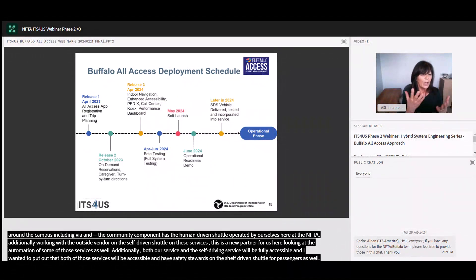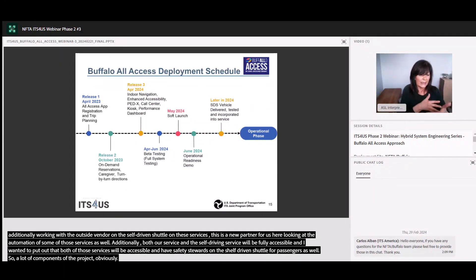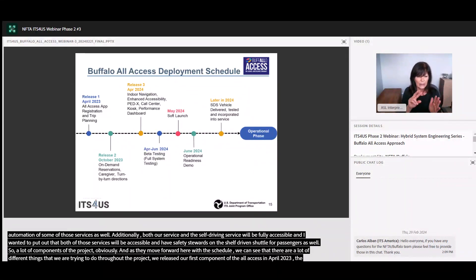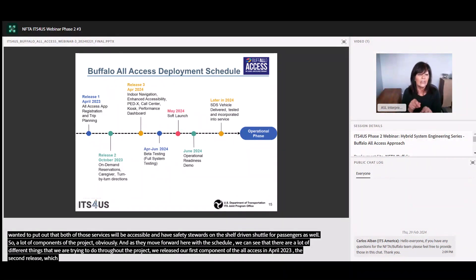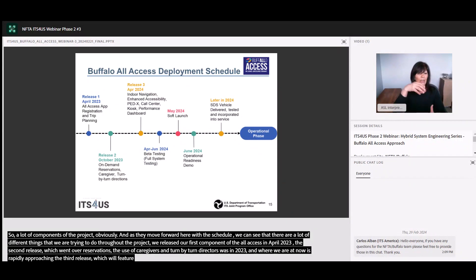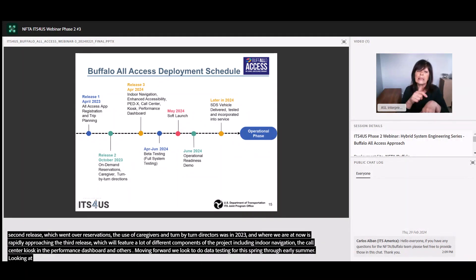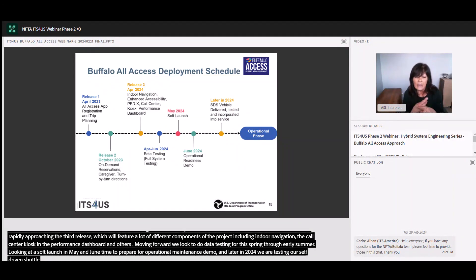There are a lot of components of our project. We released our first component of the All Access app in April of 2023. The second release, covering on-demand reservations, the use of caregivers, and turn-by-turn directions, was in October of 2023. Where we're at now is rapidly approaching our third release, which will focus on indoor navigation, our call center, kiosk, the performance dashboard, and others. Moving forward, we'll be looking to do beta testing for the full system this spring through early summer, looking at a soft launch in the May-June timeframe to prepare for operational readiness demo. Later in 2024, we'll be testing our self-driven shuttle through the vehicle delivery and figuring out how to incorporate that into the full service overall.